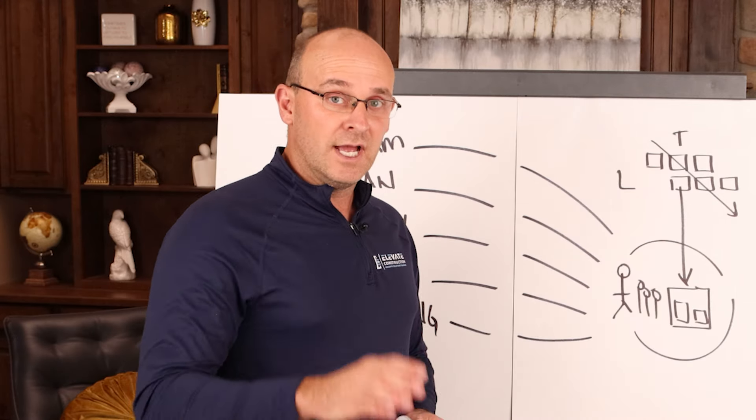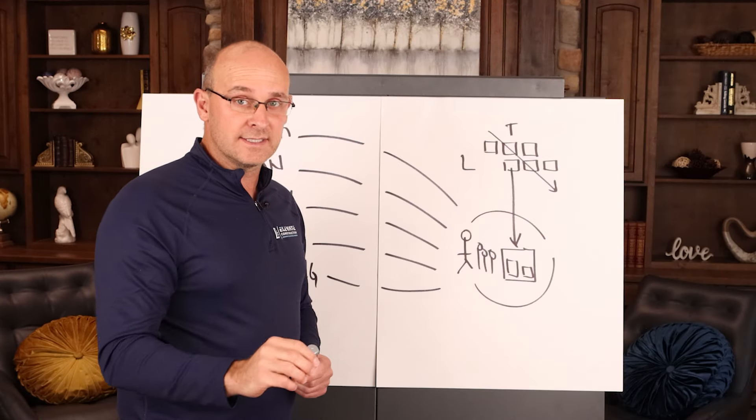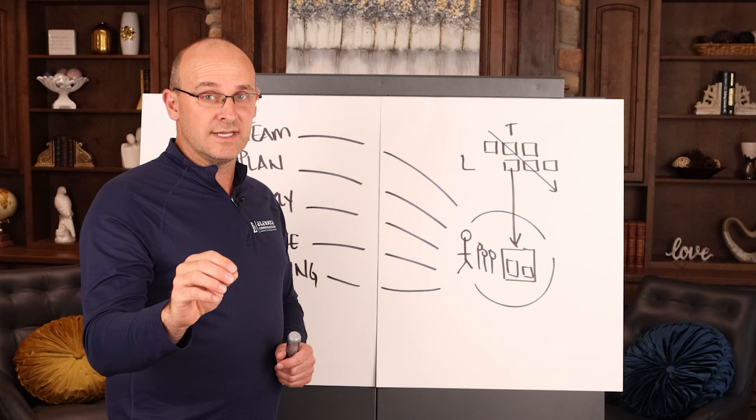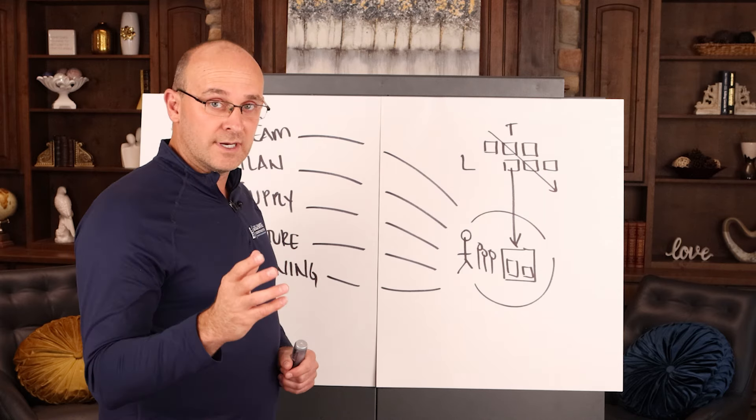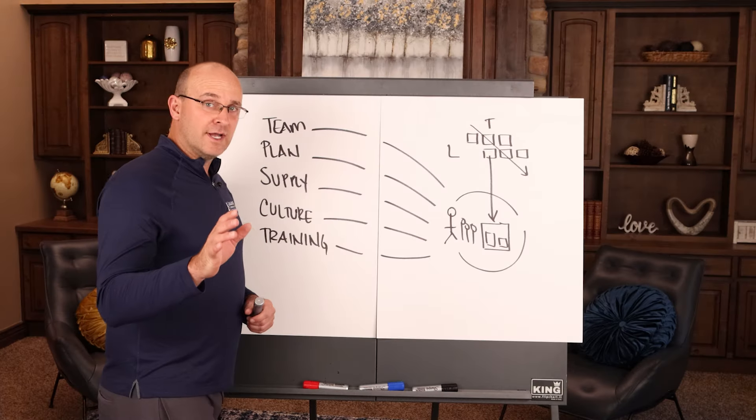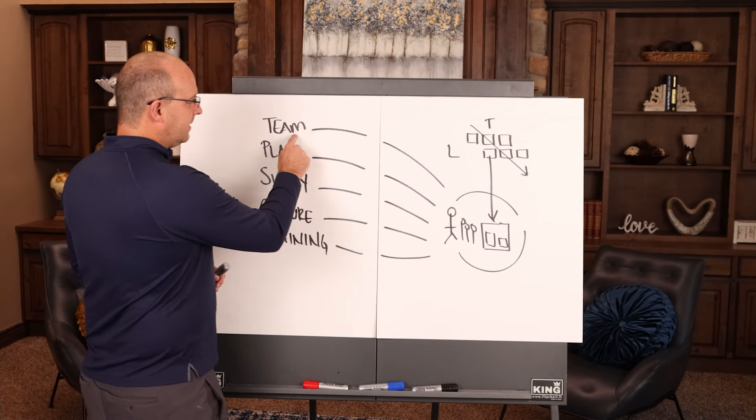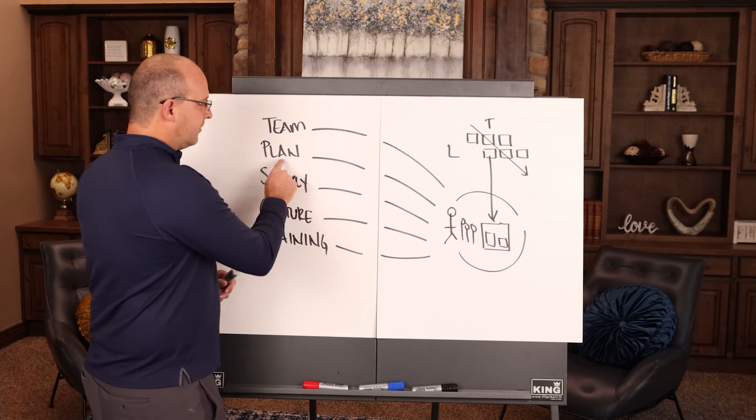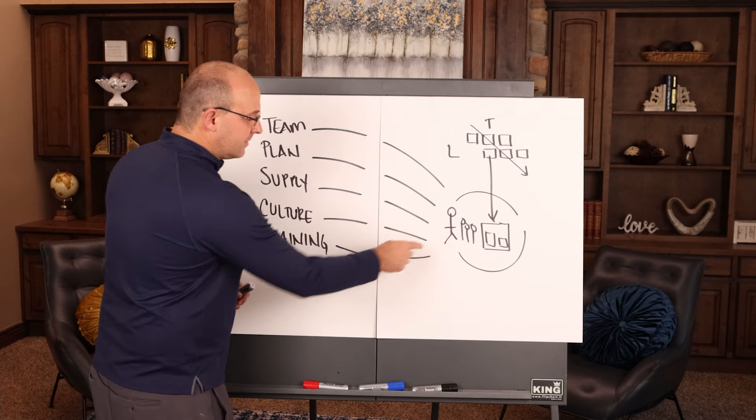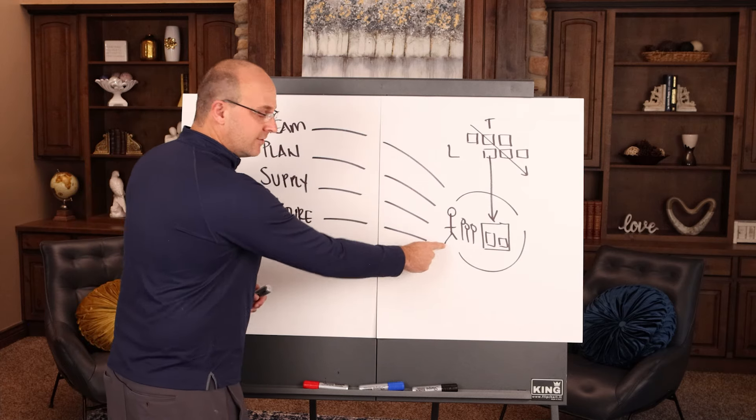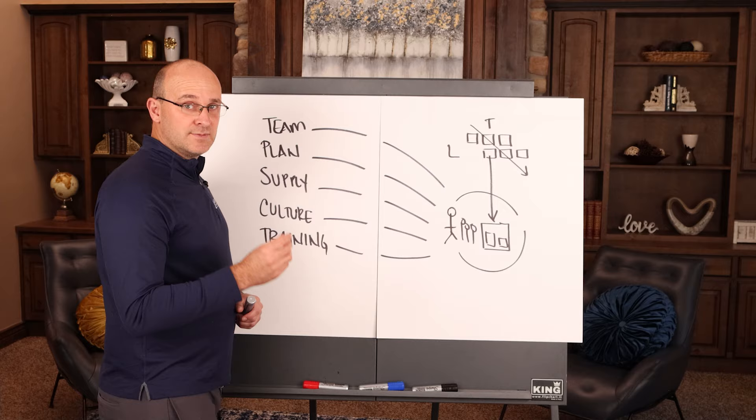So I want to talk first about building the team and how to balance the team and then specifically how to show up as an individual as a production leader. Just one more time: team is needed for the crew to have the right support, the plan so they know what they're doing, the supply chain so they have their resources, the culture so they have a good environment, and the training so they know how to show up. So now we're going to get into the team specifically.